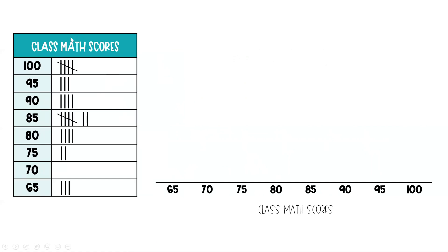Now we can chart this information from our tally chart onto our line plot over here. Down here we have the scores represented: 65, 70, 75, 80, all the way up to 100. Let's start with the 65%. Here we have three tally marks — three math scores at 65% — so we're going to put an X for each of those students. There are three X's above the 65%.